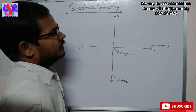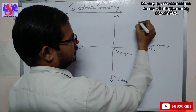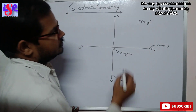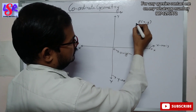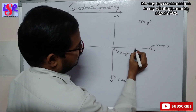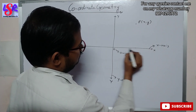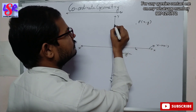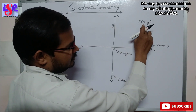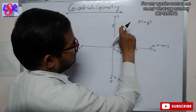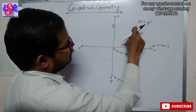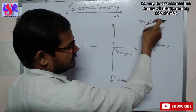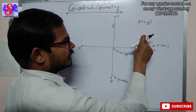Now if I write a point P which is x comma y, the x value is taken from the y axis — suppose this position is x — and the y value is from the x axis. So x is the distance from the y axis, and y is telling us the distance from the x axis.